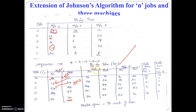Now let us move on to machine 2. For the first 12 minutes, machine 2 will remain idle because job 4 comes out of machine 1 only at the end of the 12th minute. Only after getting processed in machine 1 can job 4 move to machine 2, so it enters machine 2 at the end of the 12th minute. Job 4 requires 4 minutes to be processed in machine 2, so 12 plus 4 is 16. At the 16th minute, machine 2 becomes free.